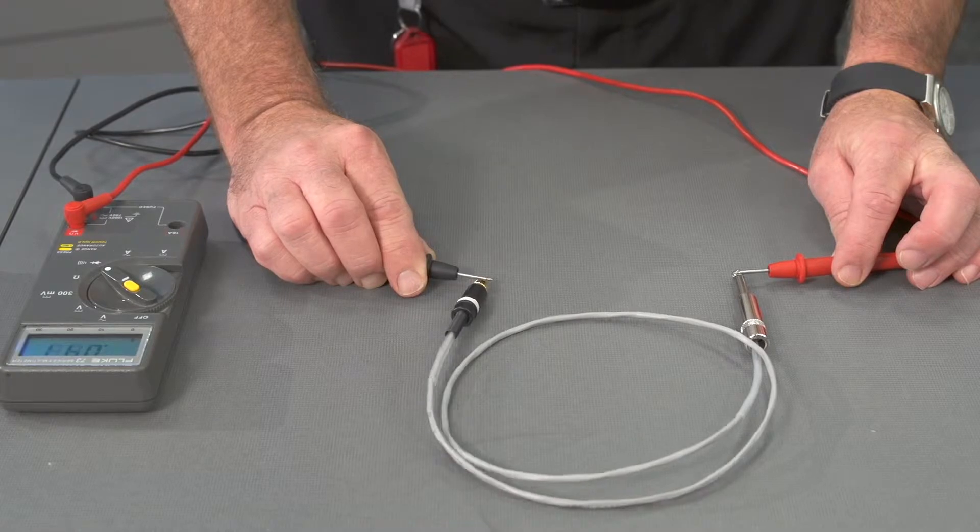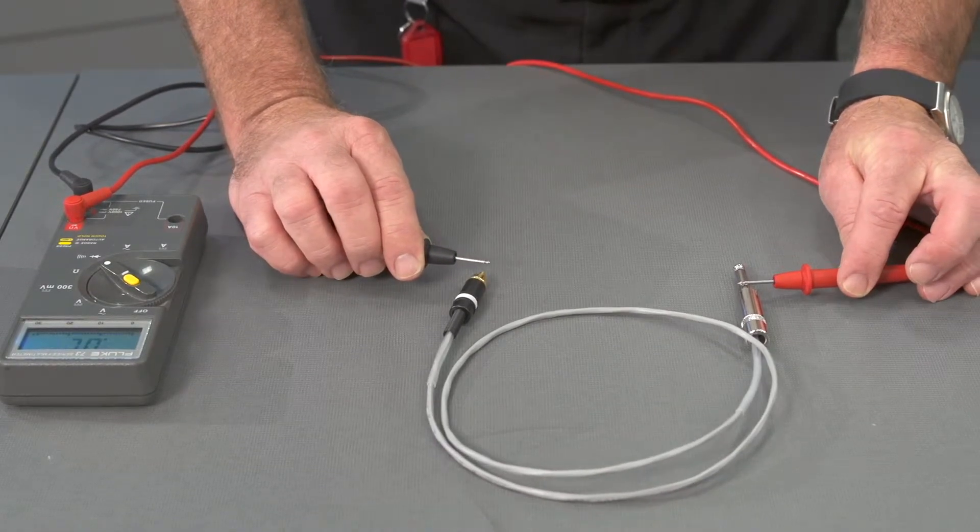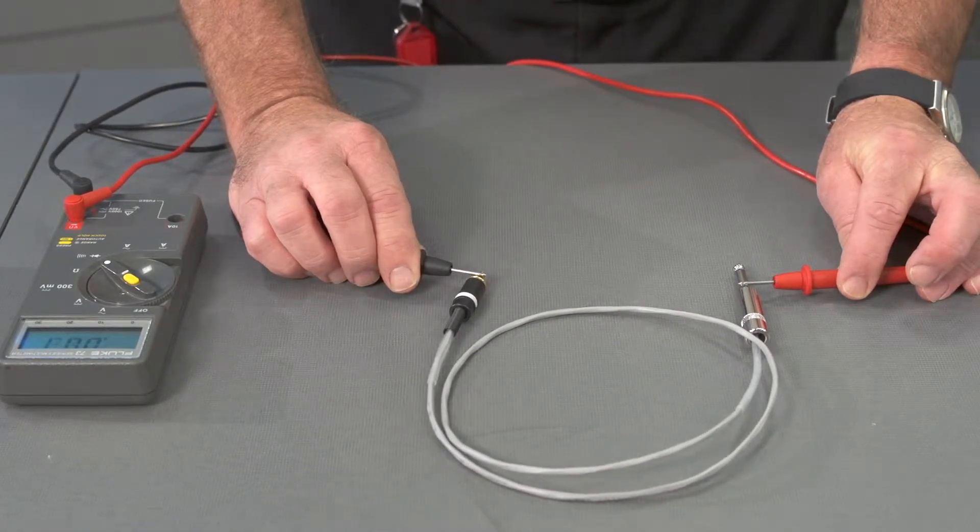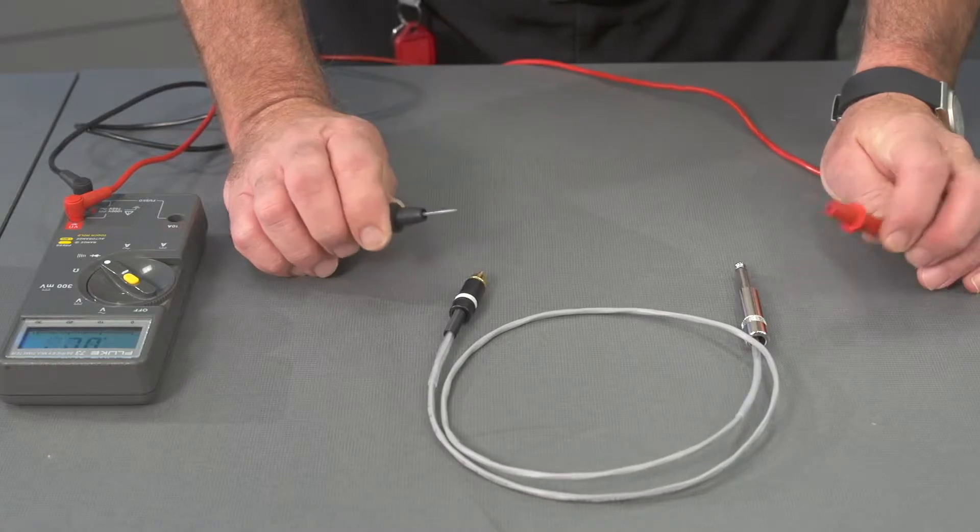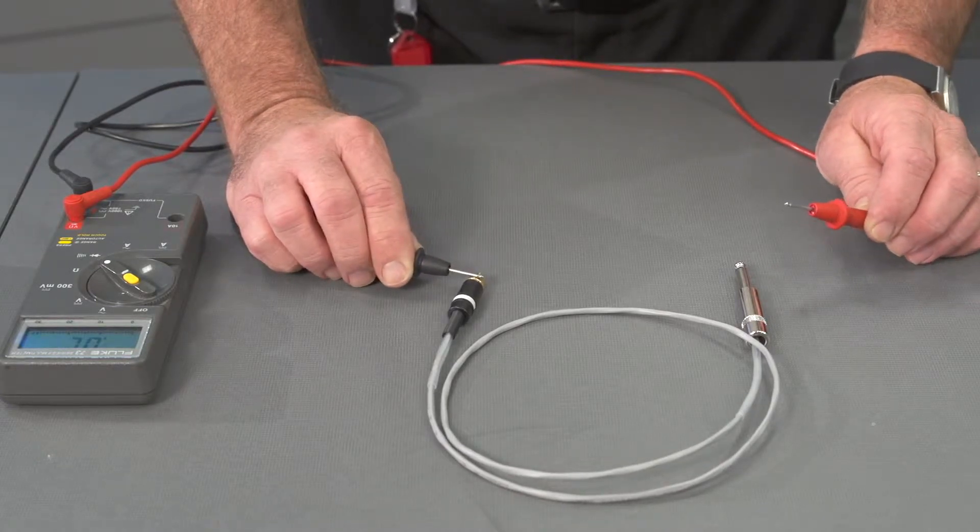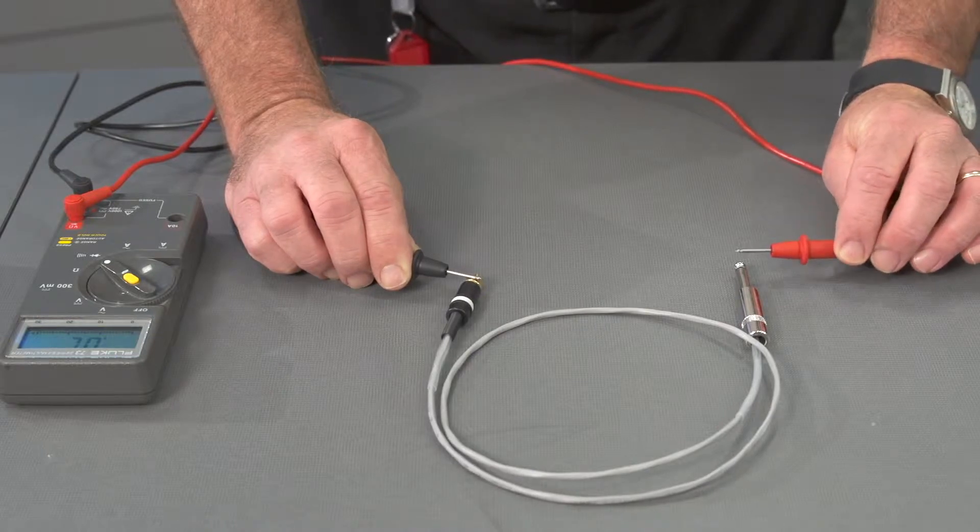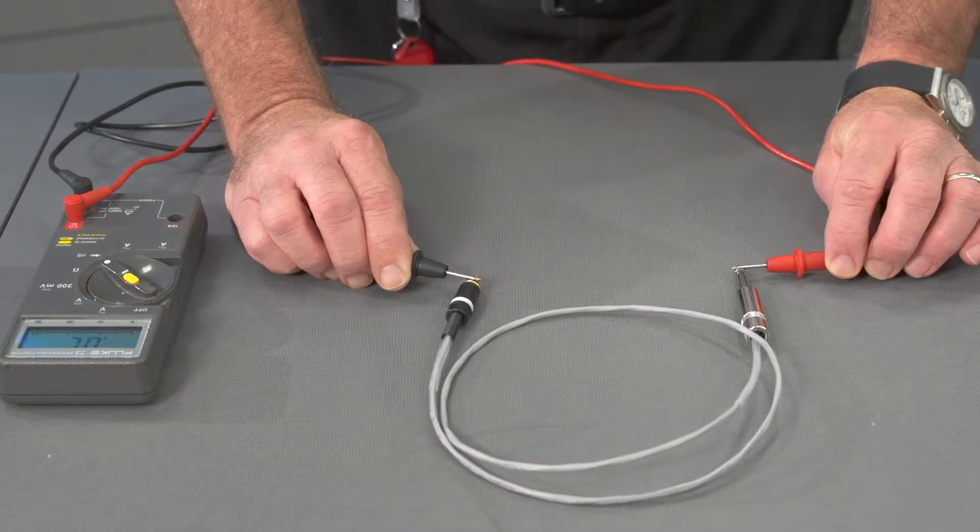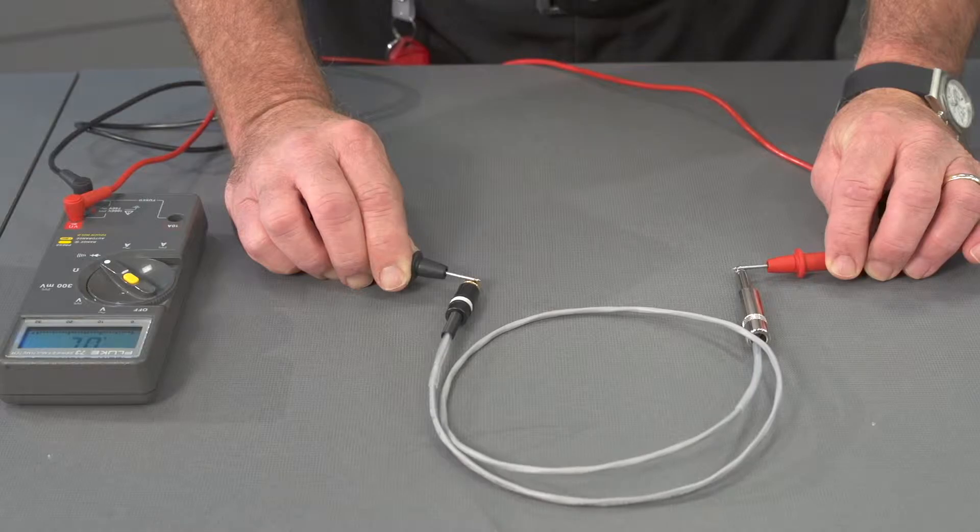Moving it to other poles of the connectors, we can also check to make sure we don't have connectors crossed inside. We can check the negative pole for one to the positive pole to the other, in which we get no response at all.